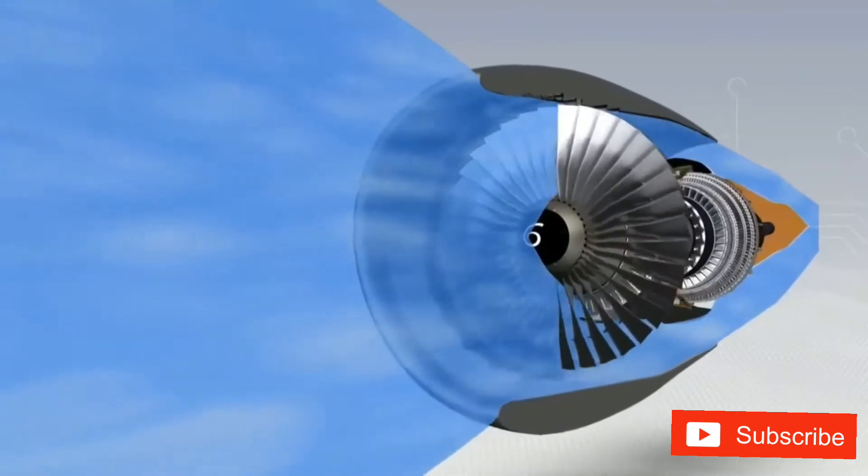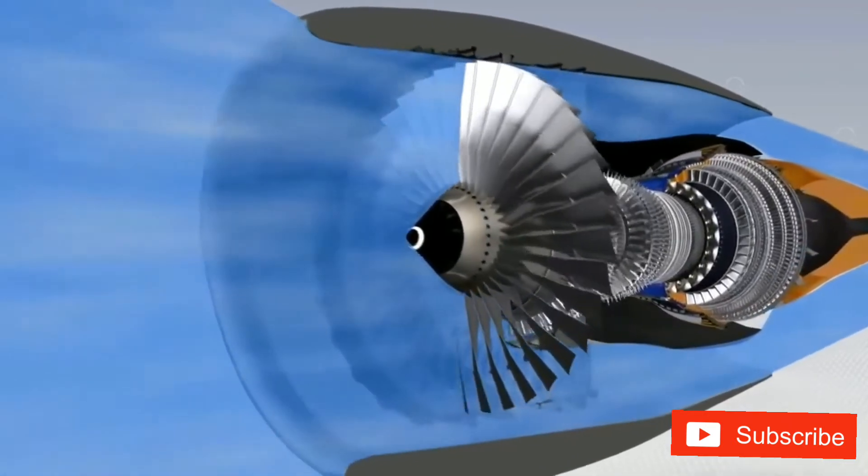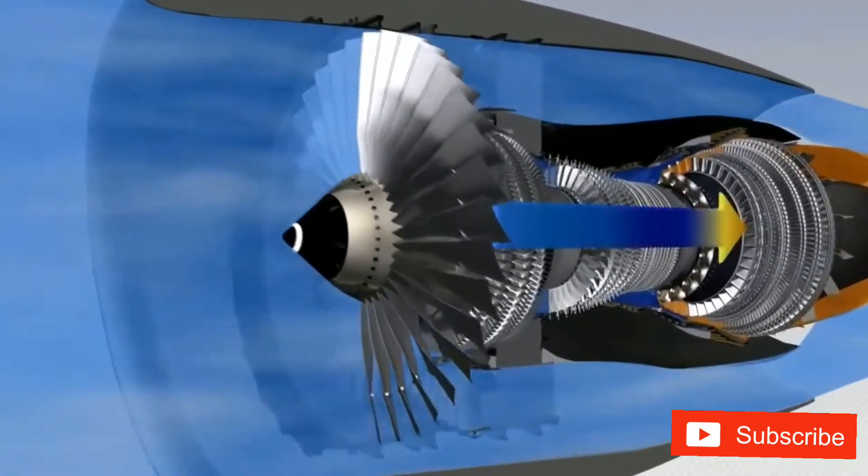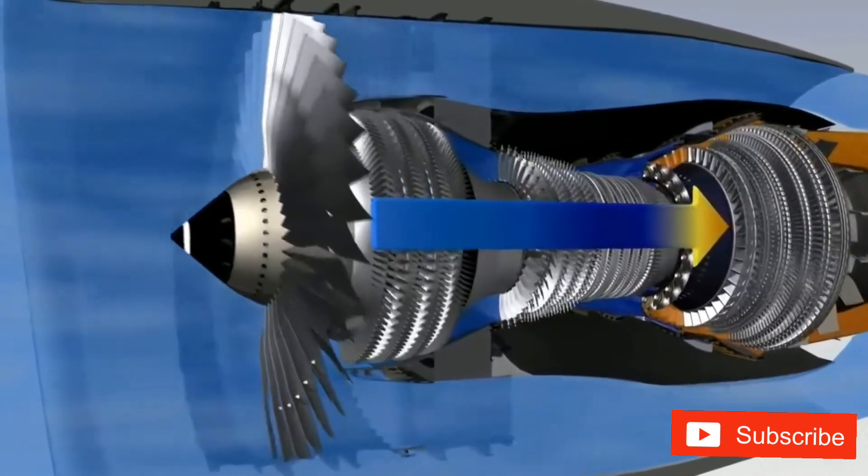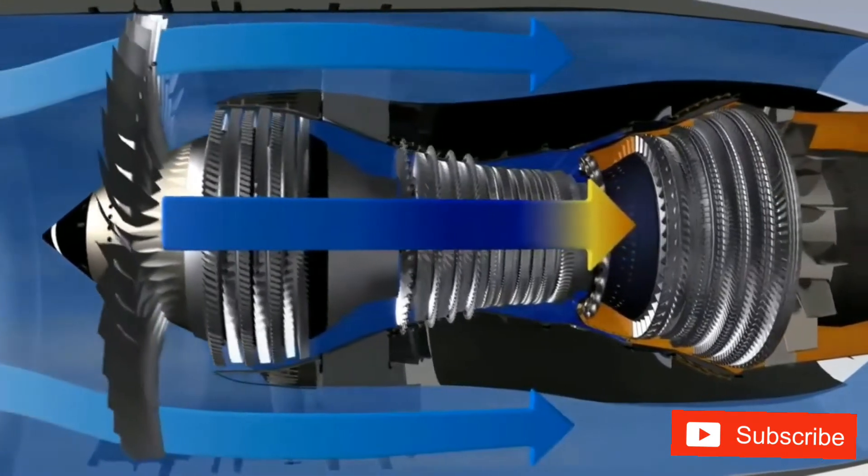The CFM56-5B is a high bypass ratio engine. The primary flow passes through the combustor, while the secondary flow passes only through the fan.